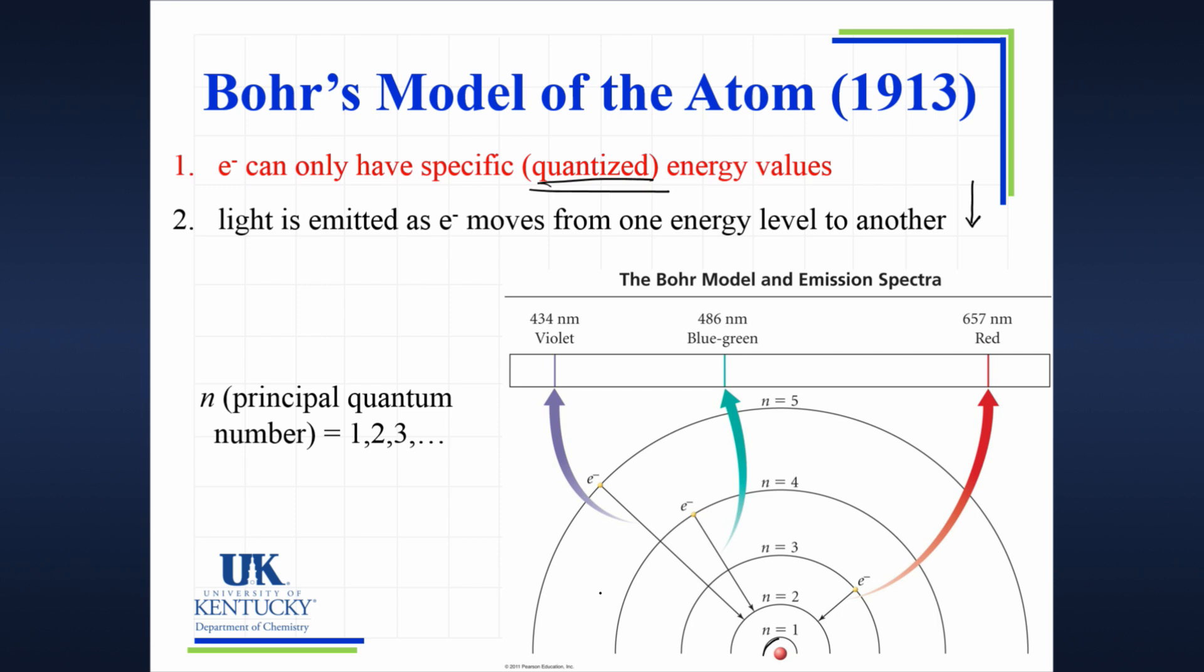Well, let's say an electron is promoted up here and now it is further away from the nucleus. That electron of the hydrogen atom is further away. That electron doesn't want to be out here. It wants to be in the n equals 1 lowest energy state.